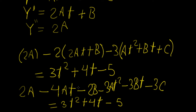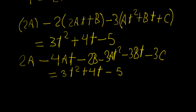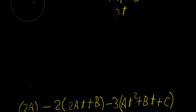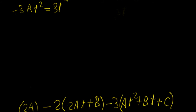So what can we do now to solve for a, b, and c? We're going to group them together — all the terms that have t squared, all the terms with t to the power of 1, and the constant terms. So grouping the t squared terms: minus 3at squared equals 3t squared. Cancelling, that leaves us with a equals minus 1. That's the first undetermined coefficient.